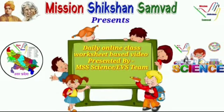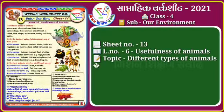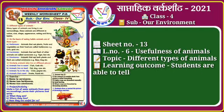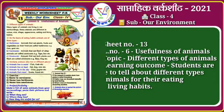Dear students, welcome to the daily online classes presented by Mission Shikshan Samwad. For class 4, the subject is our environment. Sheet number 13, lesson number 6: usefulness of animals, and the topic is different types of animals.